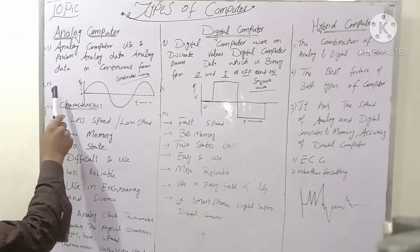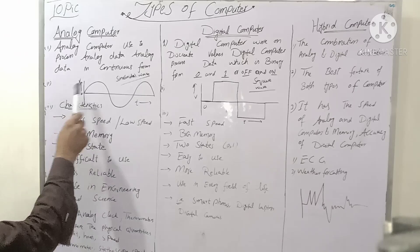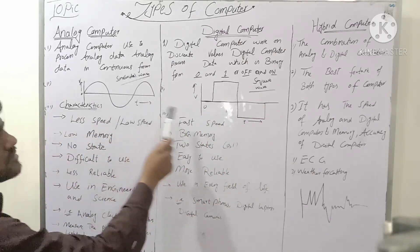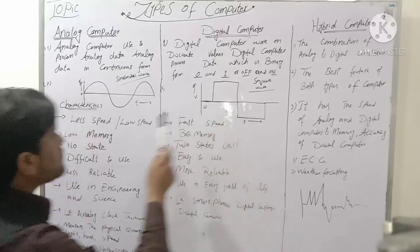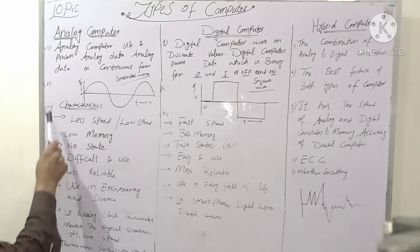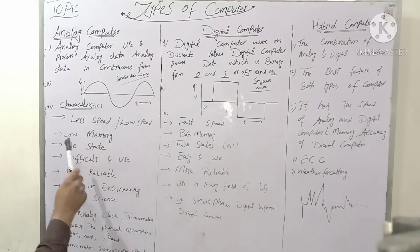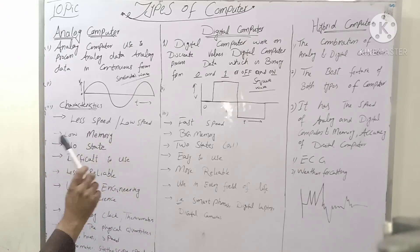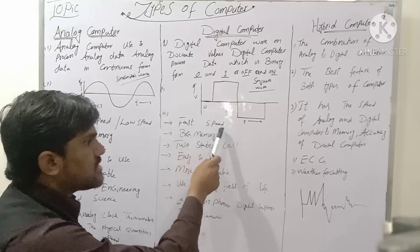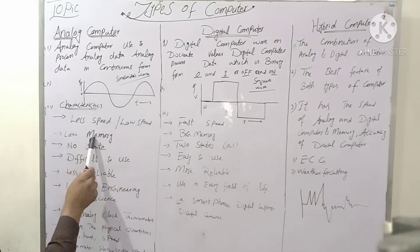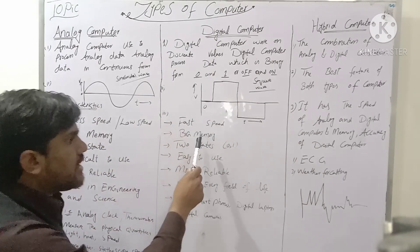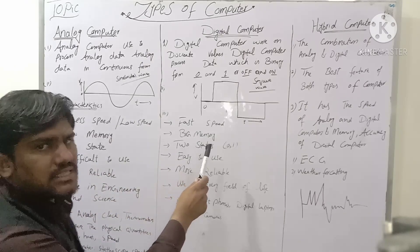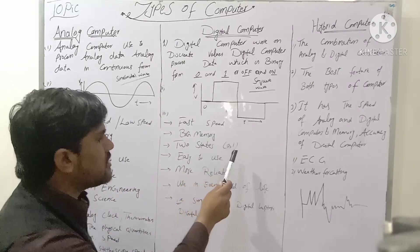The second difference is the waveform: analog computers use a sinusoidal wave, while digital computers use a square wave with values of zero and one. For characteristics: analog computers have less speed and low memory, but digital computers have faster speed and big memory. Analog has no state, but digital has two states — zero and one.